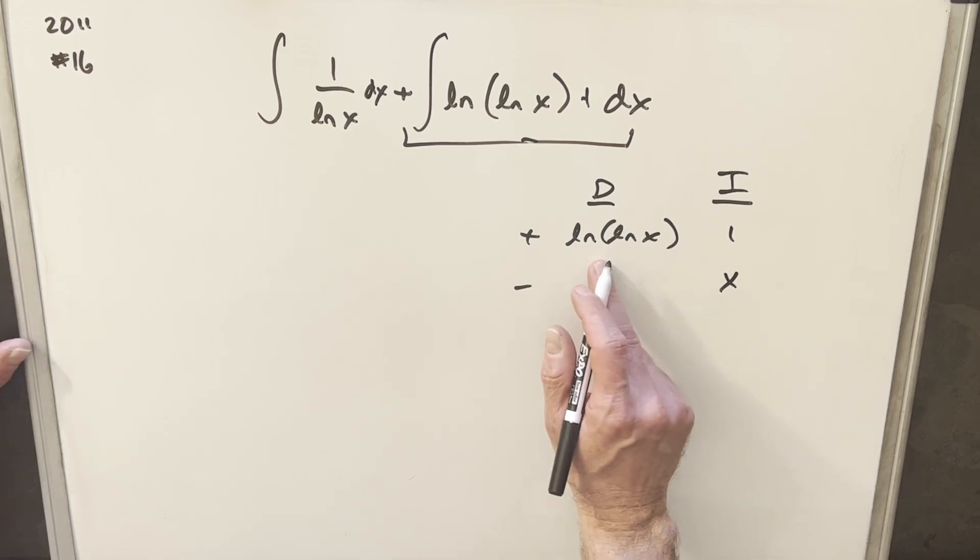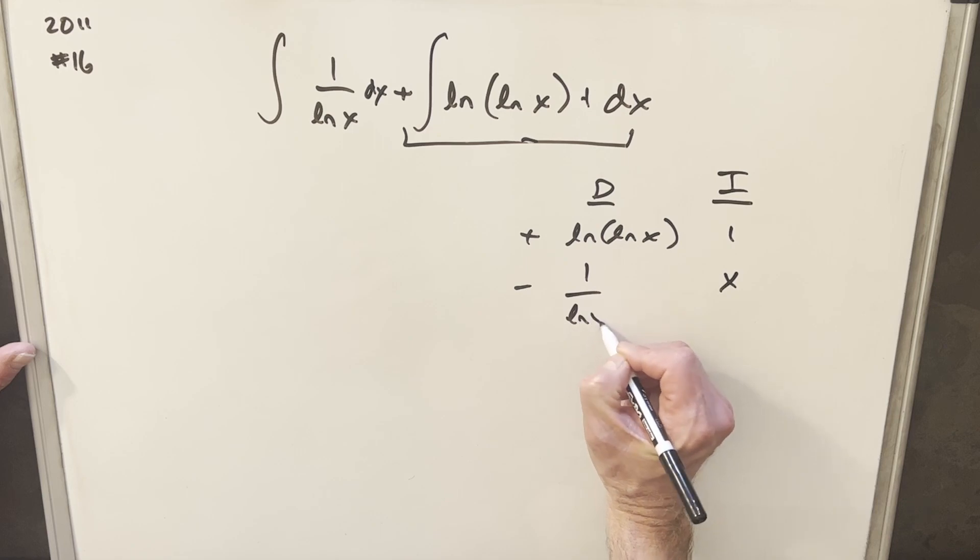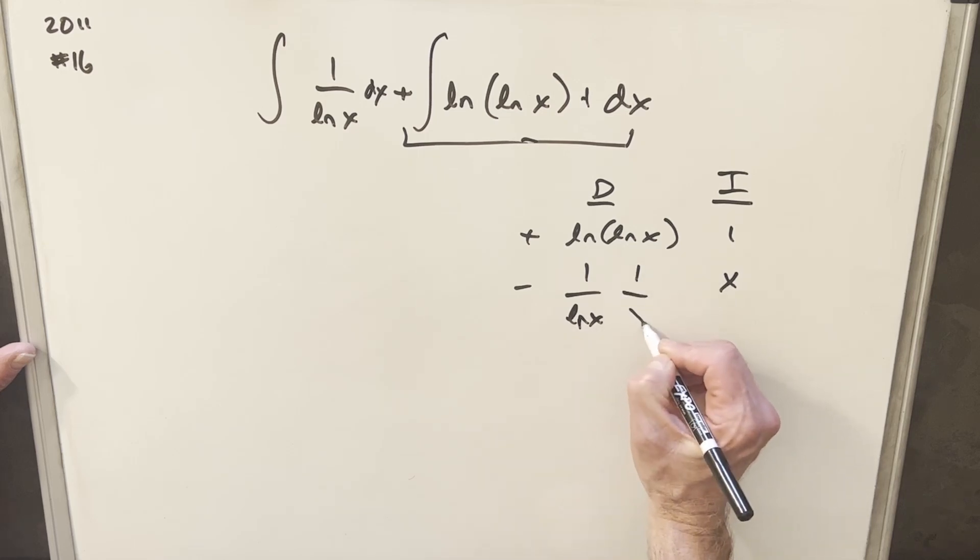We'll take this derivative here. Okay, so the derivative of this is going to be 1 over lnx, but we need the chain rule, and so we'll take the derivative of the inner term, lnx, and derivative of that's going to be 1 over x.